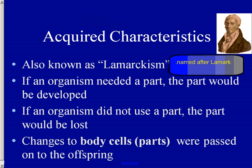What Lamarck proposed was that an organism that needs a particular part will use that part, it will grow and develop, and that developed part will then be passed on to the offspring. For example, if a giraffe tries to reach leaves above its head, it will stretch its neck. That aspect has been shown to be incorrect. However, he was correct in the concept of heredity — that successful traits are passed on to offspring.